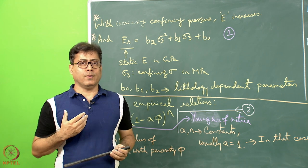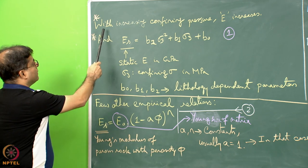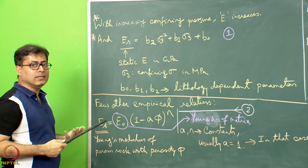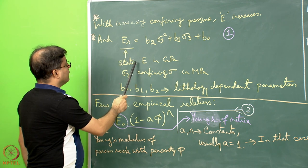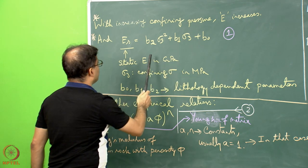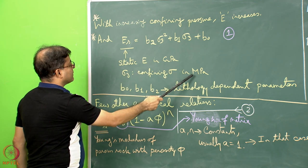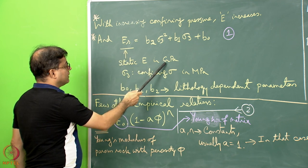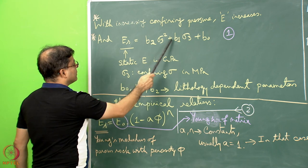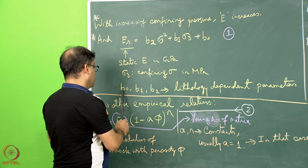Young's modulus depends on several factors. With increasing confining pressure, the Young's modulus increases. An empirical relation for this is: Es (static Young's modulus in GPa) = B2·σ3² + B1·σ3 + B0, a quadratic relationship where σ3 is confining stress in MPa, and B0, B1, B2 are lithology-dependent parameters that vary for different rock types.